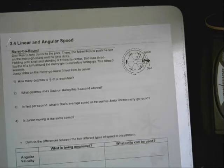So this first little bit is to kind of help you understand exactly what linear and angular speed are. So, this is one of those little merry-go-rounds from a park. You know, the ones that your parents would put you on, and they'd run around, and you'd get really dizzy. People would fly off. So, Dad takes Junior to the park. Dad likes to push his son on the merry-go-round until he gets dizzy. Holding onto a rail and standing eight feet from its center, Dad runs three-fourths of a turn around the merry-go-round before he lets go. That takes him three seconds. Junior rides on the merry-go-round five feet from its center. So, the first question it asks is, how many degrees is in three-quarters of a revolution?